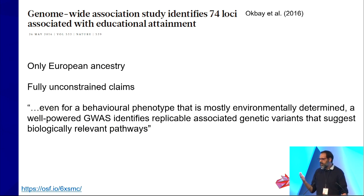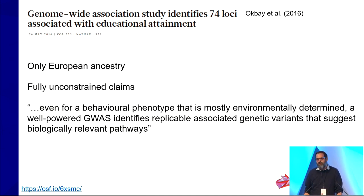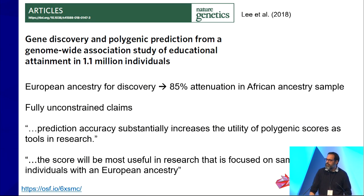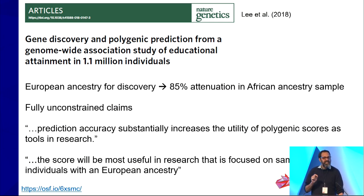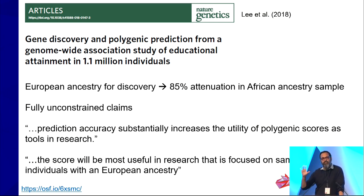The second iteration had a larger sample of over 300,000 but otherwise looked exactly the same — fully European ancestry, fully unconstrained claims. The turning point was the third study, the Liadol study, with over a million participants. The discovery sample was still European ancestry, but they did an additional analysis in an African ancestry sample and saw an 85% reduction in the already small effect size. They acknowledged this in the limitations, but all claims — the title, abstract, implications — were fully unconstrained.